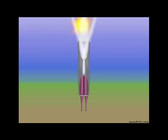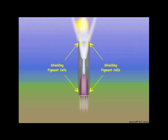During the daytime, when light is abundant, scotopic ommatidia detect light similar to photopic ommatidia. The shielding pigments in the secondary pigment cells of scotopic ommatidia absorb light rays that enter the corneal lens at an angle, and each ommatidium detects light independently of neighboring ommatidia, just as in photopic ommatidia.